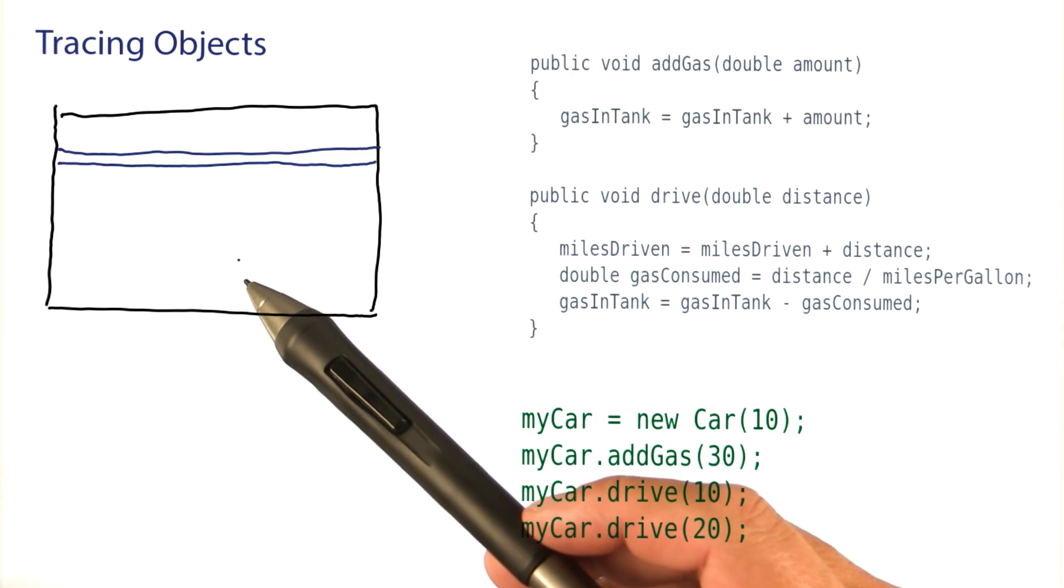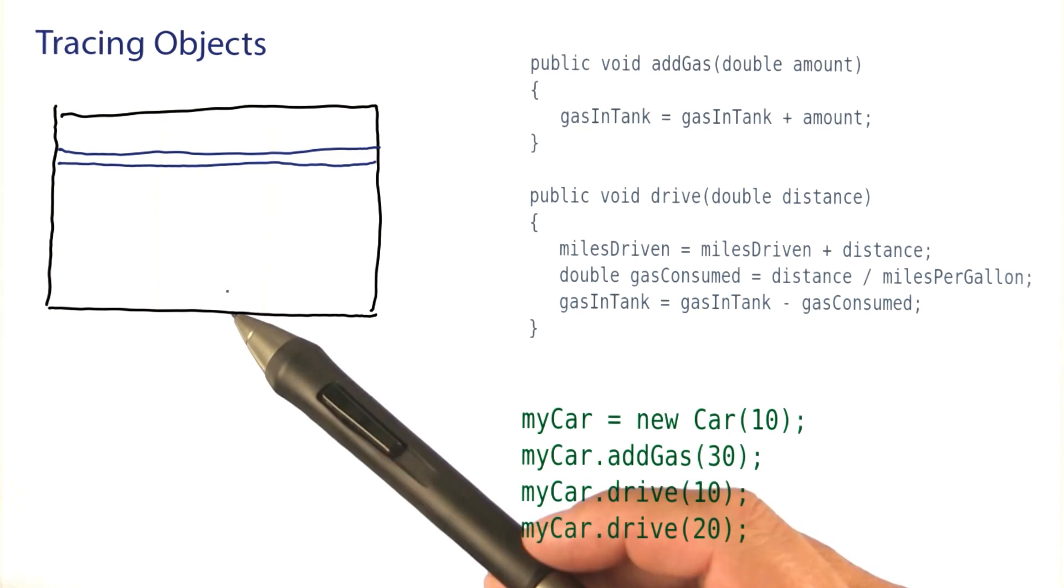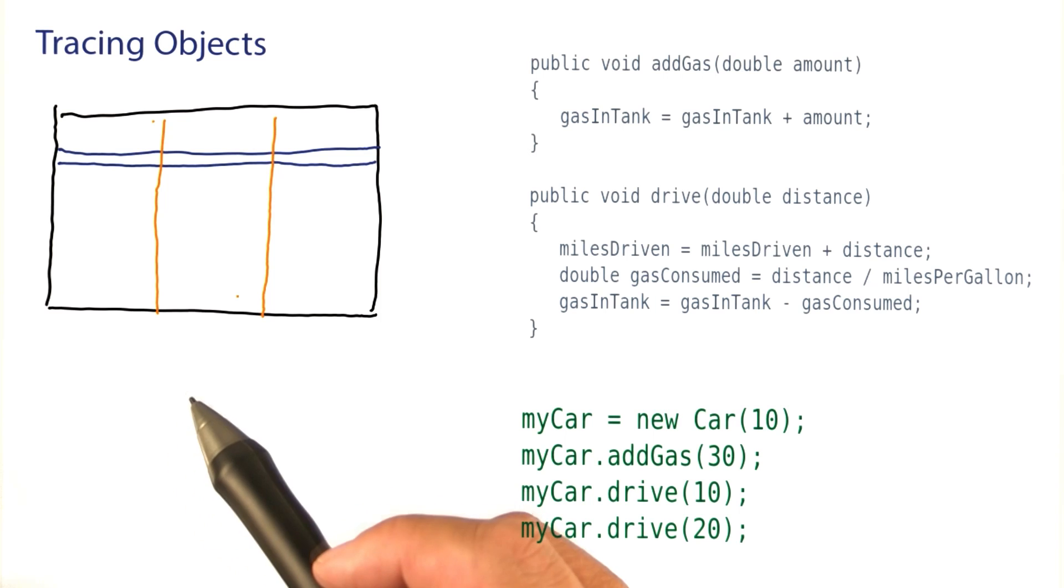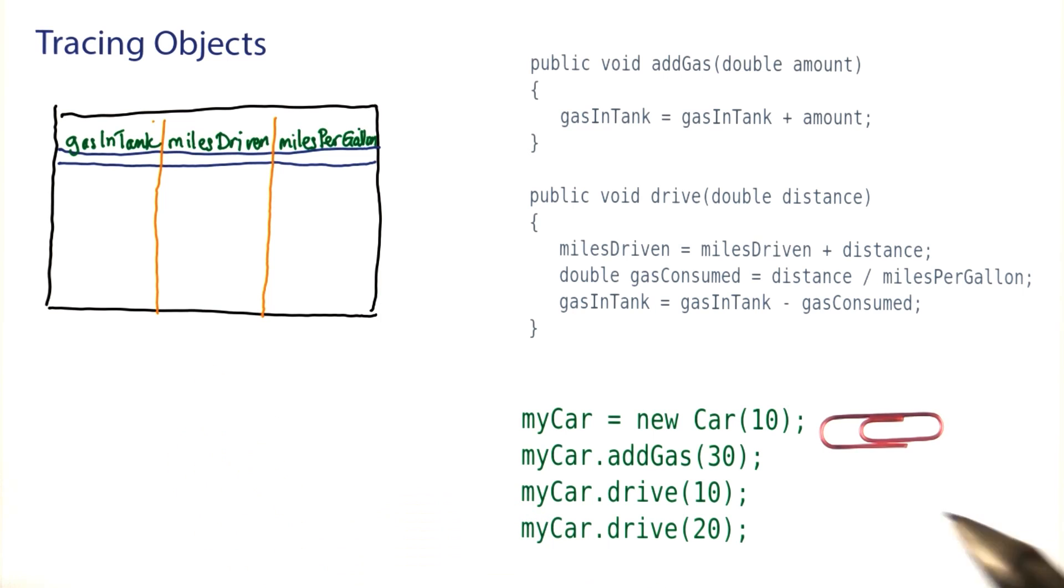Get yourself an index card, or a napkin, or some other piece of paper. Make a column for each instance variable. So let's get started. I put the paper clip so we can see where we are.